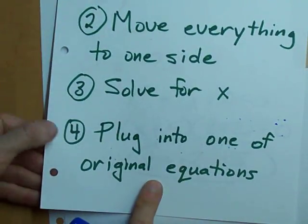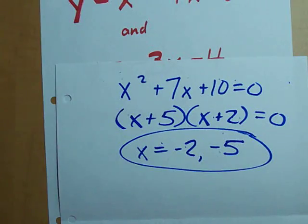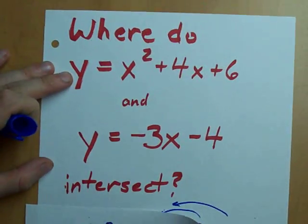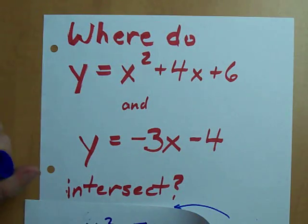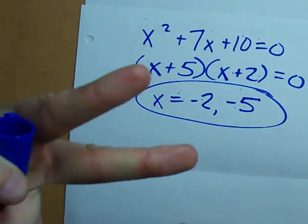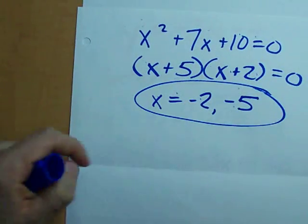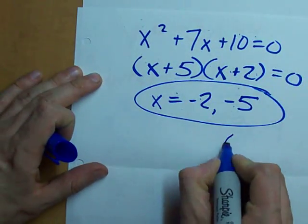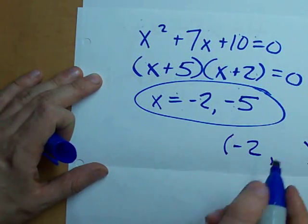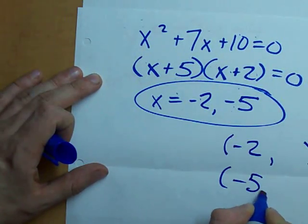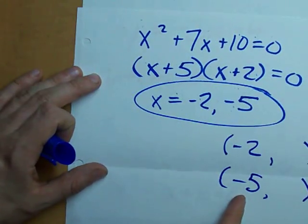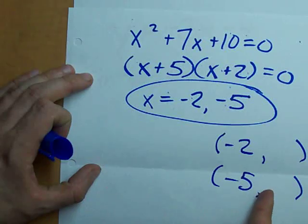Number 4. Plug into one of the original equations. So, here's the deal. Where do that parabola and that line intersect? They intersect in two places. You know how I know it's two? Because I get two answers. And the points where they intersect are negative 2 and something and negative 5 and something. These are the coordinates. Who knows what these are yet? We have to figure it out.